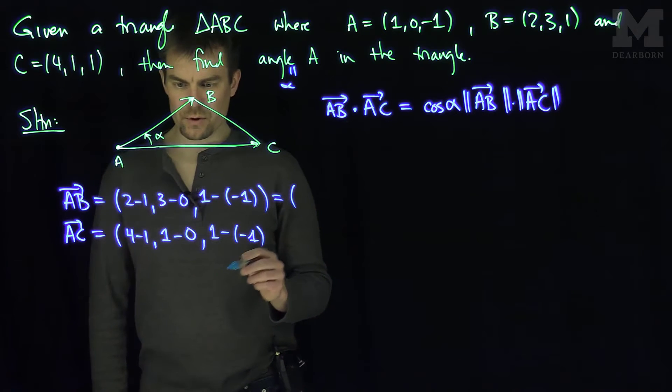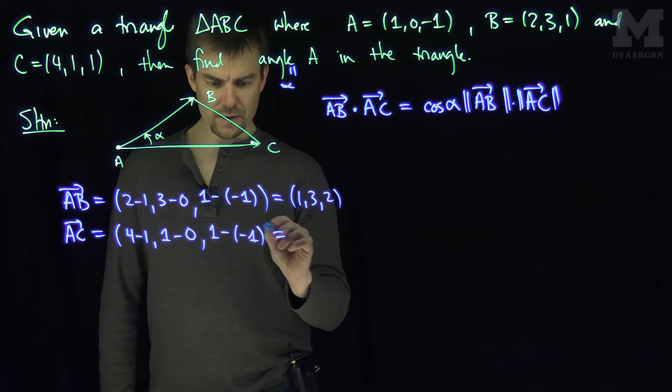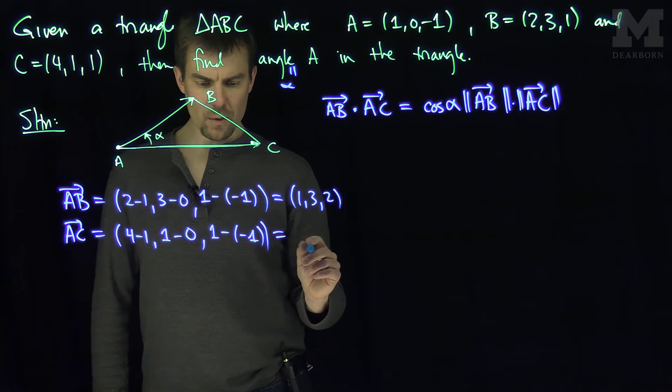Let's simplify this first vector over here. It's going to be (1,3,2). And this vector down over here is going to be (3,1,2).